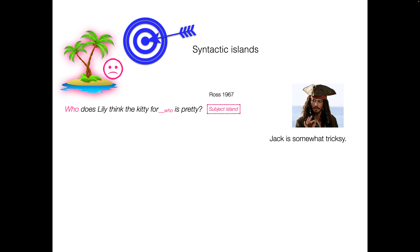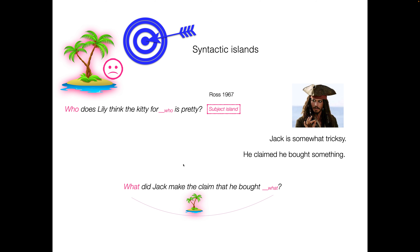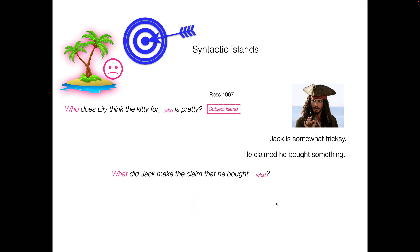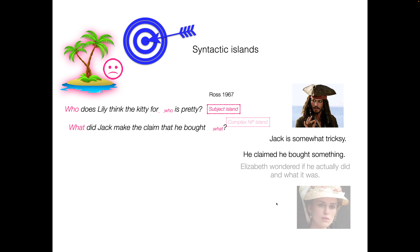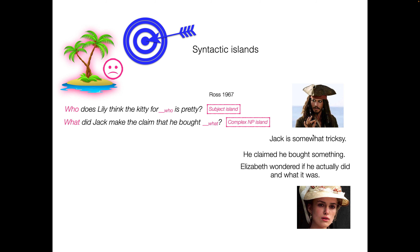Let's look at a couple of other ones. We have Captain Jack Sparrow — he's somewhat tricksy, and he claimed he bought something. We might want to ask about that: 'What did Jack make the claim that he bought?' And yeah, don't like it so much. It's been known as a complex NP island.